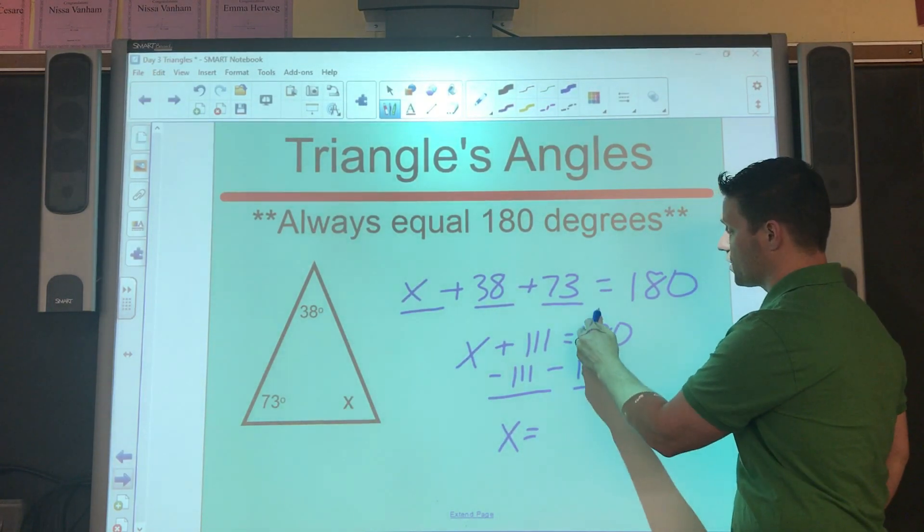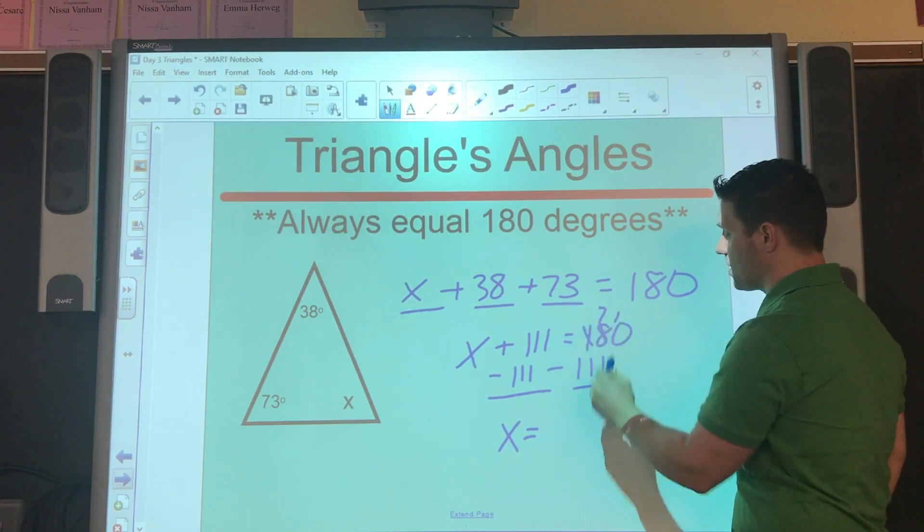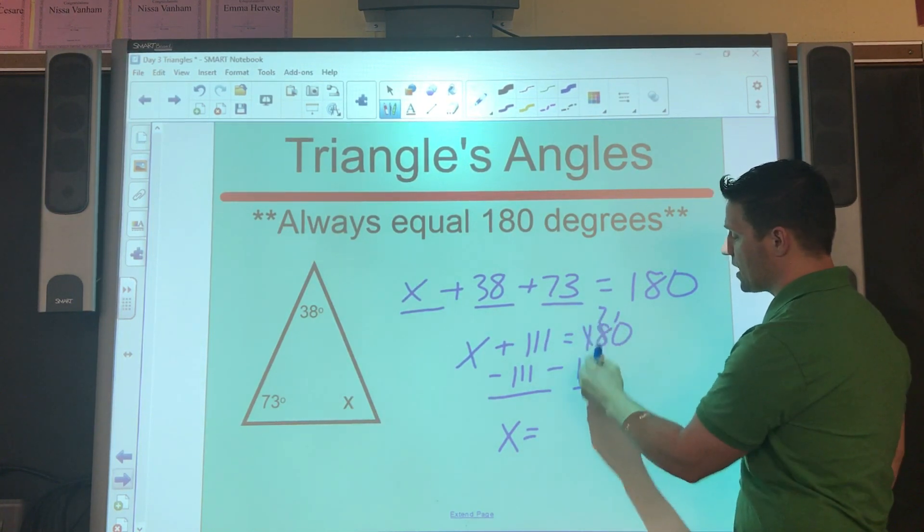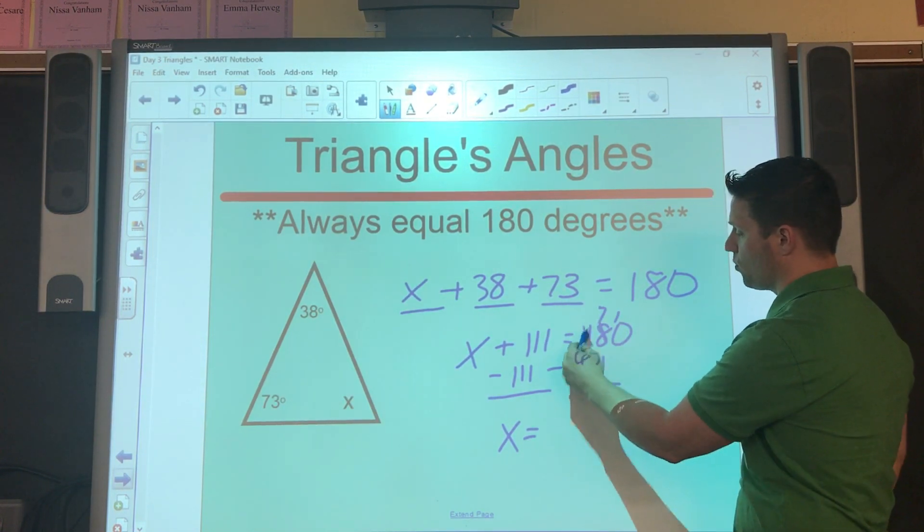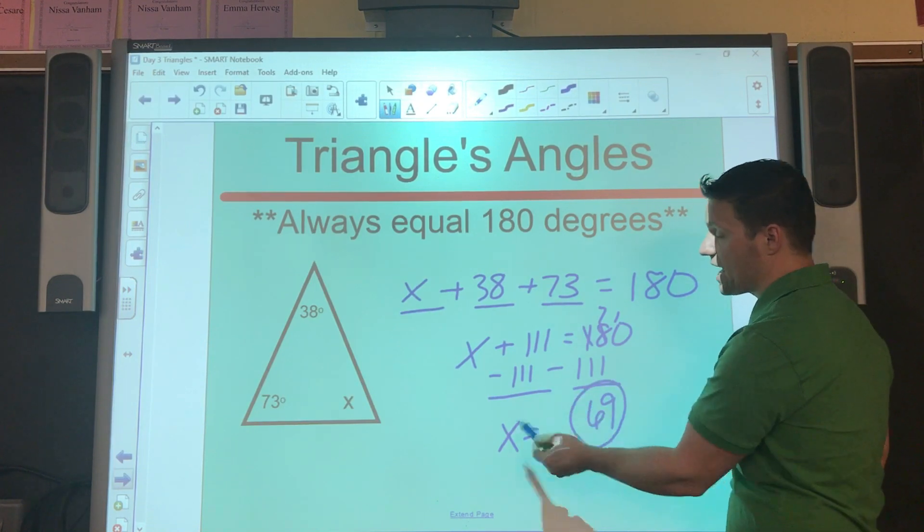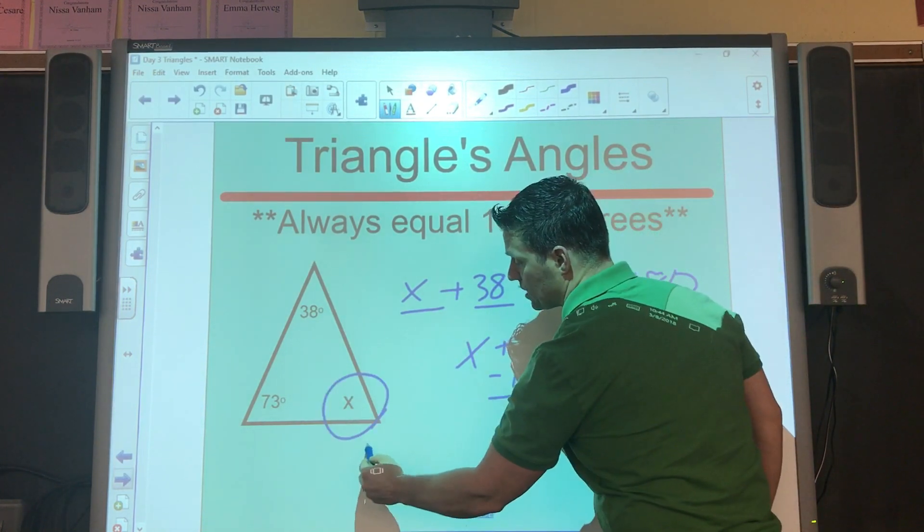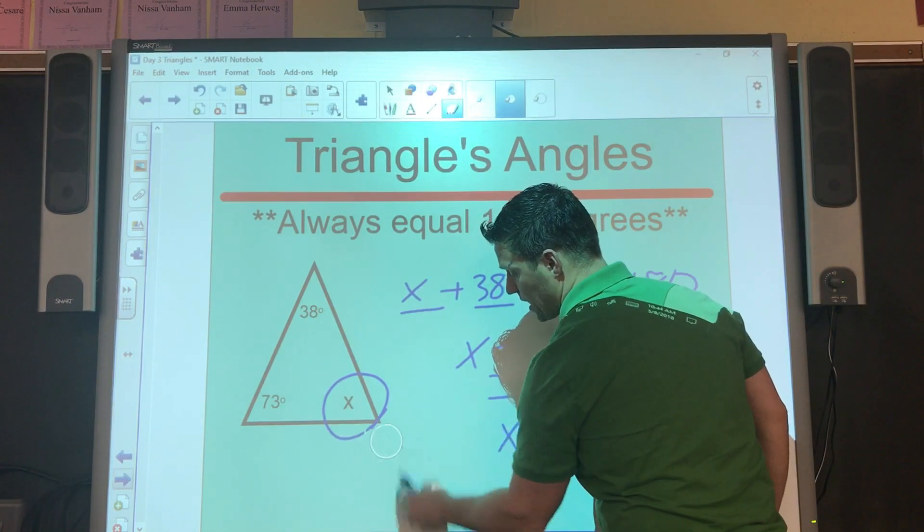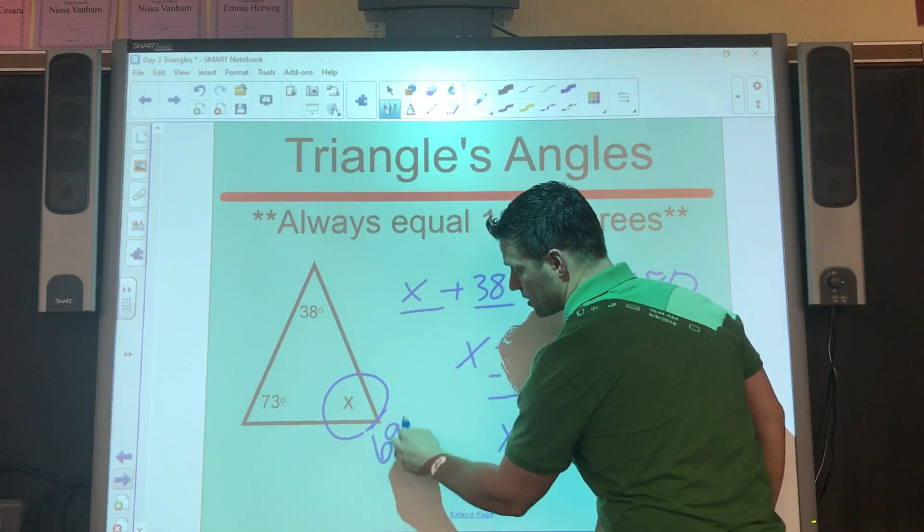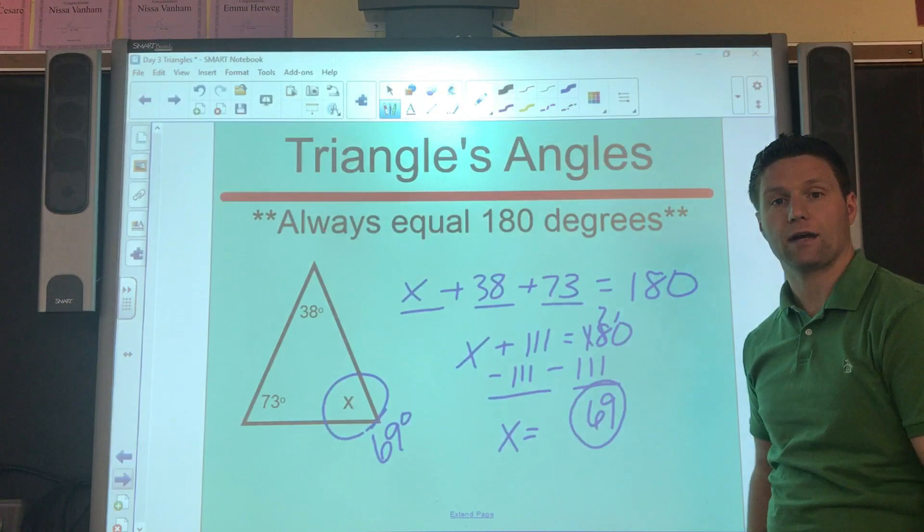x equals, I'll do this quickly, that turns to a 7, and I'm borrowing 9, 7 minus the 1 is 6, the 1 minus the 1 is 0. That means that missing angle has to be the leftover 69 degrees on this.